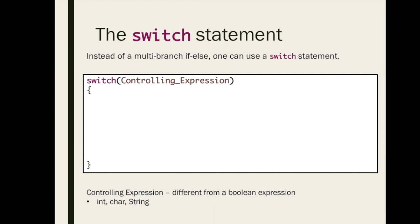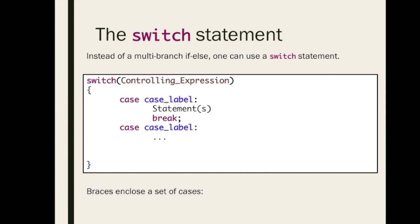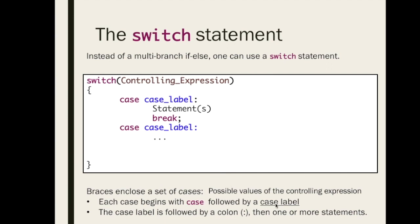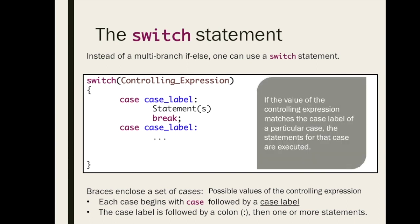The switch statement is then followed by a set of curly braces. Within these curly braces, we enclose a set of cases. These cases are the possible values of the controlling expression. So if I had an int as my controlling expression, like number, I could say case 1 as my case label — basically saying if number is equal to 1. Each case begins with the keyword case followed by a case label, then a colon, and then one or more statements to execute. If the value of the controlling expression matches the case label, those statements will be executed.